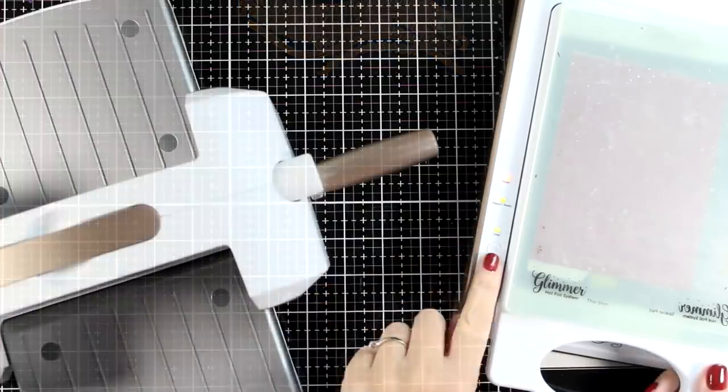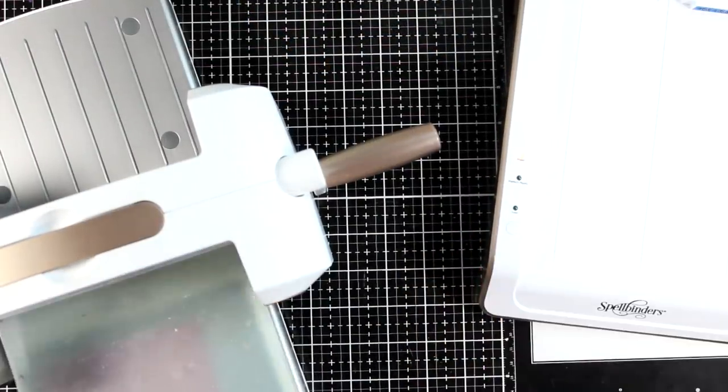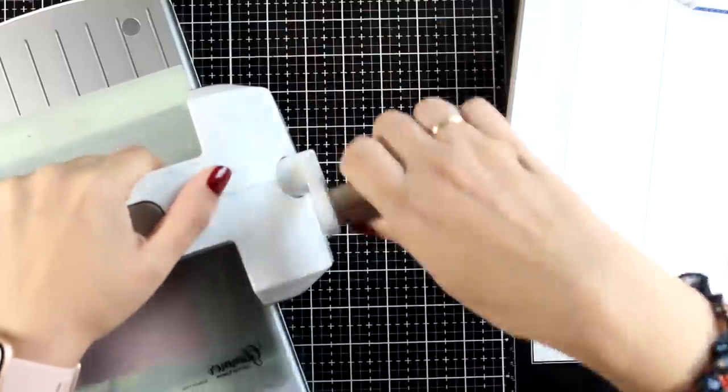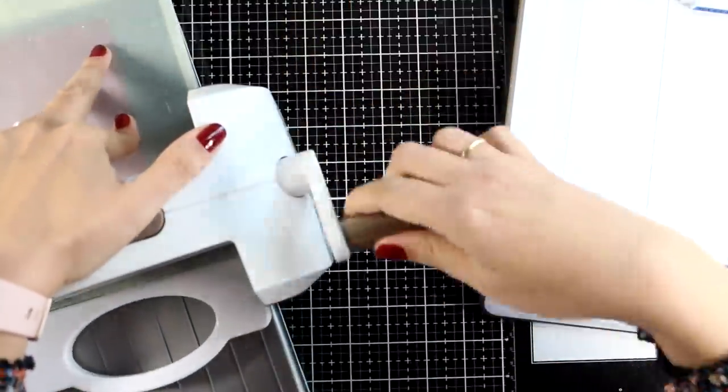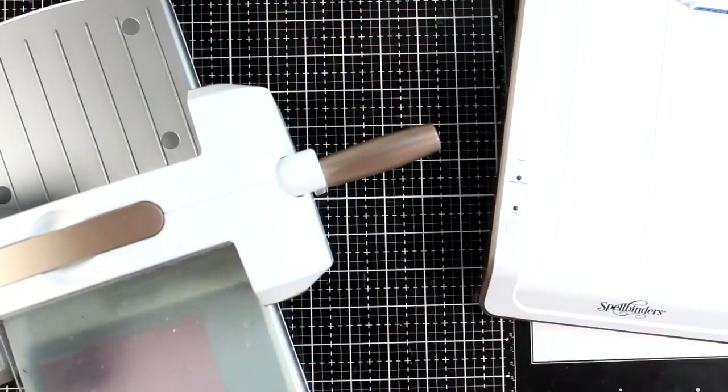Now at this stage I could have gone and foiled the sentiment at the same time, but I didn't plan ahead. I wasn't sure of what I'm going to do, so I will have to foil this piece of cardstock twice.